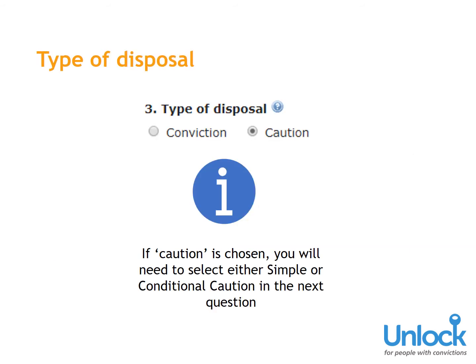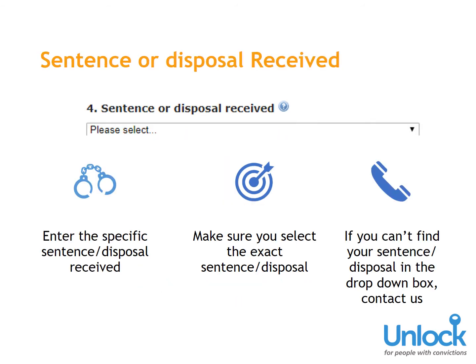Type of Disposal: If you select Caution, make sure that in the next section you choose either Simple Caution or Conditional Caution. You'll need to enter the specific sentence or disposal that you received for the conviction, as this will determine the rehabilitation period for that specific offence. Make sure you select the exact sentence or disposal that you received, as many disposals have similar names but different rehabilitation periods. If you choose the wrong one, the results may be inaccurate.